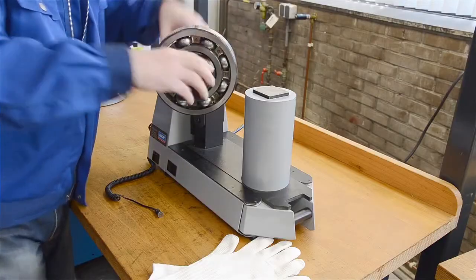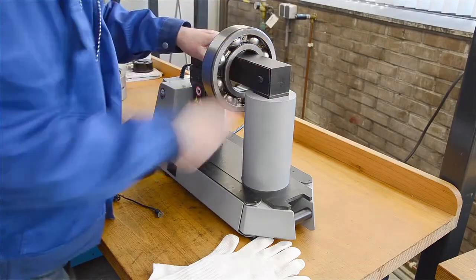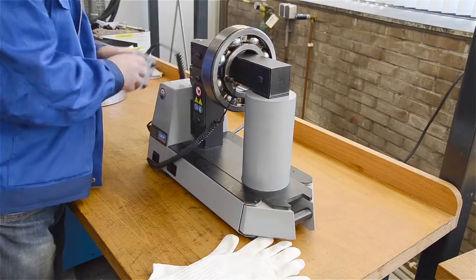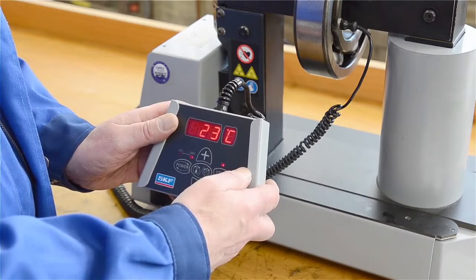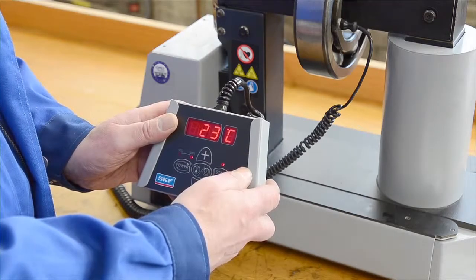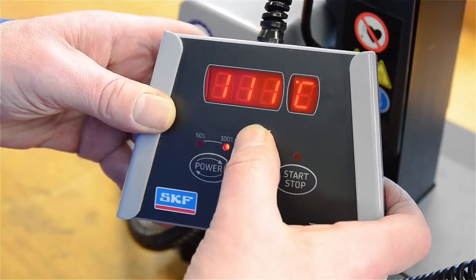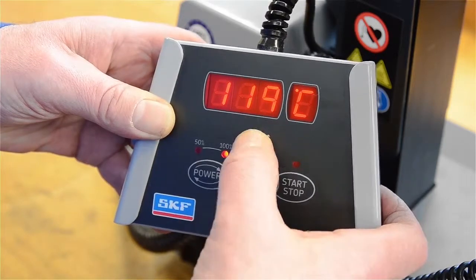Place the bearing on the heater, then place the temperature probe on the bearing inner ring. Press the start button on the remote control and the bearing starts heating. The preset temperature is 110 degrees Celsius, but you can also choose the temperature you want.